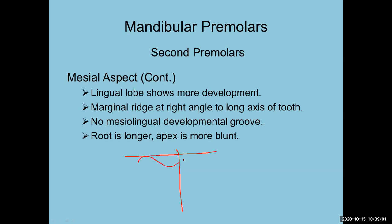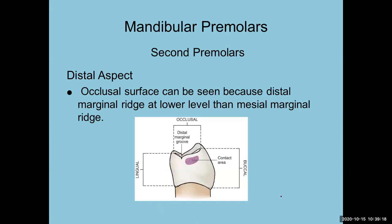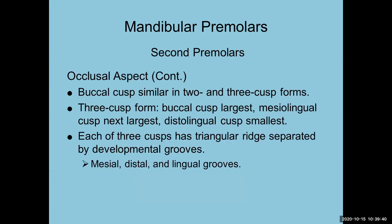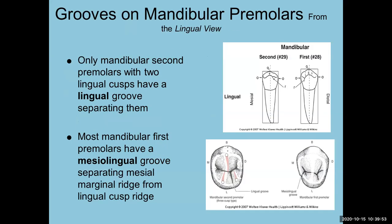Comparing first and second mandibular premolars: the lingual lobes are more developed on the second. There are two- or three-cusp types. In the three-cusp form, the mesial lingual and distal lingual cusps are present, with the mesial lingual larger and longer, divided by a groove. In the two-cusp type, the lingual lobe is higher than on the mandibular first premolar, and there's no groove on the lingual lobe. The second premolar has a higher lingual cusp and is not quite as lingually tilted as the first premolar.